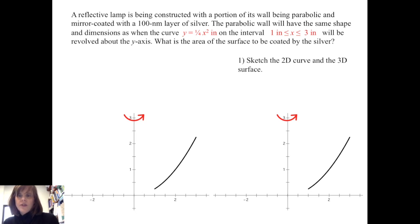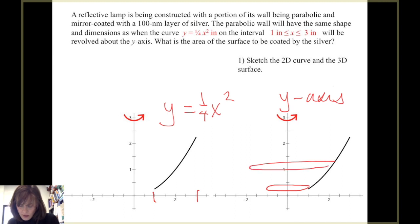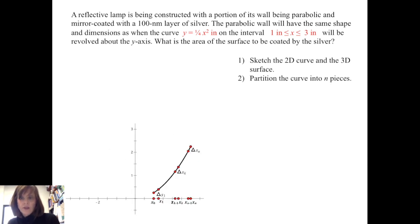Let's begin with a sketch of the two-dimensional curve and the three-dimensional surface. On the left, we have a sketch of y equals one-fourth x squared on the interval from one to three, and if we revolve this curve about the y-axis, we can see what will happen to various points along the curve. We can see this parabolic shape, parabolic solid. Using three-dimensional graphics, we get this. And so let's proceed.